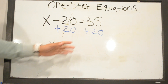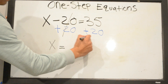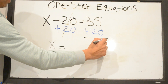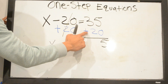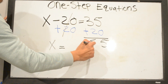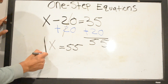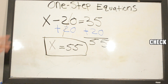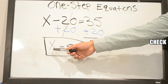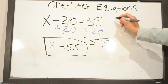We have positive 35 and positive 20. When we have both the same signs we're going to add: 0 plus 5 is 5, and 2 plus 3 is 5, so X equals 55. To check if the answer is right, write 55 where your X is.